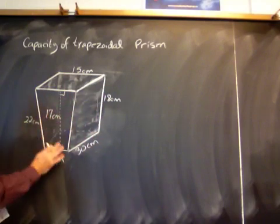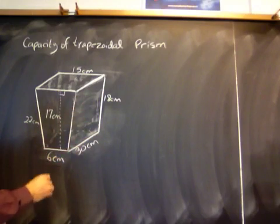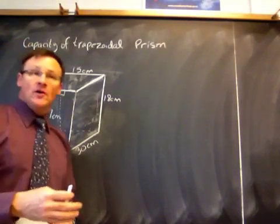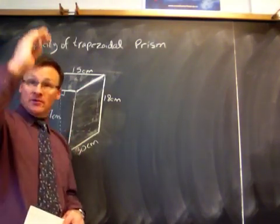There's a trapezoid in the front, there's going to be a trapezoid in the back, if you can imagine that. And just like any prism, we have to find the volume by calculating the area of the base times the height.